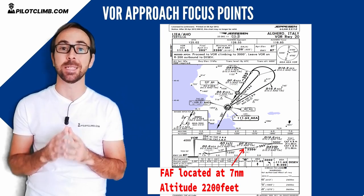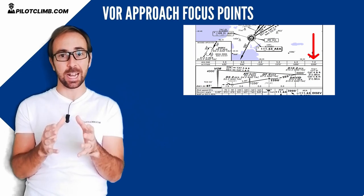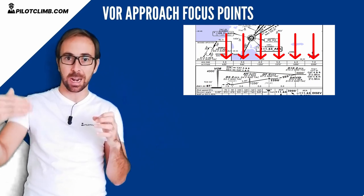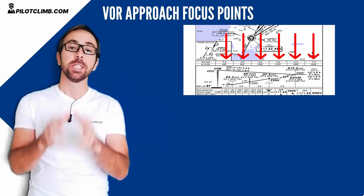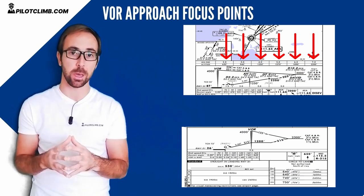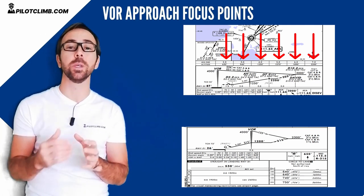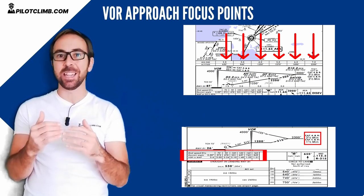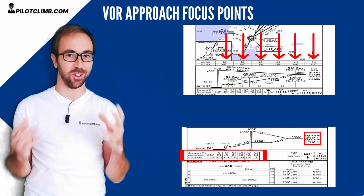Some VOR approaches have got distance and altitude — like the VOR DME — because you have a VOR providing lateral guidance via a radial, and a DME giving you the distance. Some VOR approaches are timed approaches. If you have only the VOR and you don't have the DME, you will have a timed VOR approach — using time instead of distances. Timed non-precision approaches are less precise than VOR DME approaches, because the timing really depends on where you start the clock.